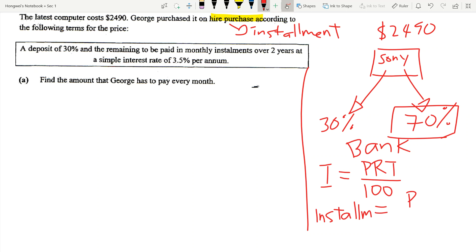Monthly installment always equals your principal (the amount you borrow) plus the interest, divided by the number of months. Then you find out one month you need to pay how much. So in this case, a deposit of 30% is being paid and the remaining is to be paid in monthly installments over two years. A very good practice of doing finance questions, doing simple interest questions...